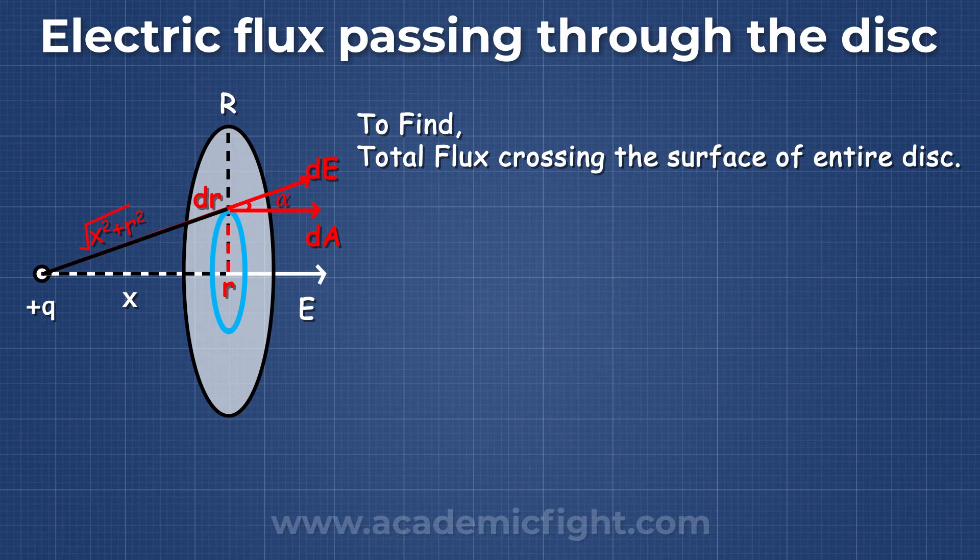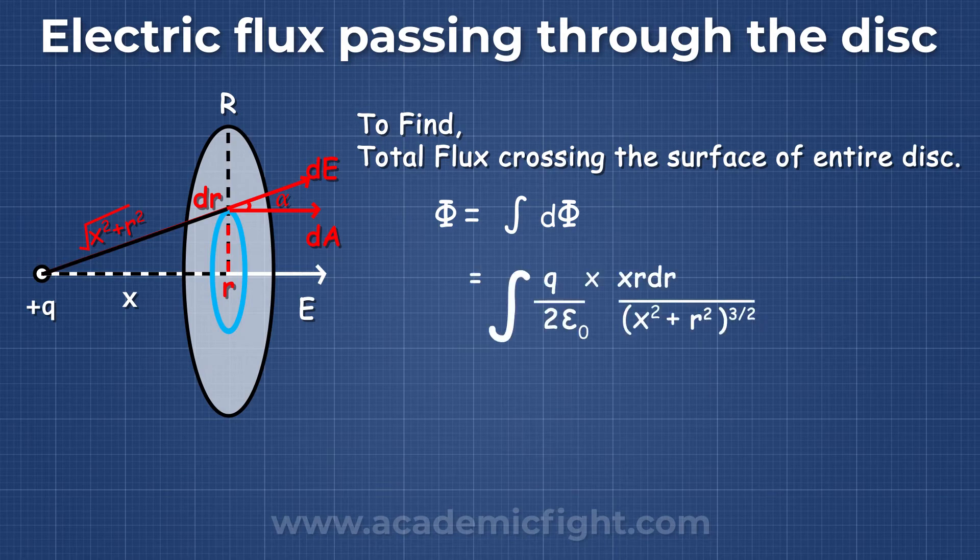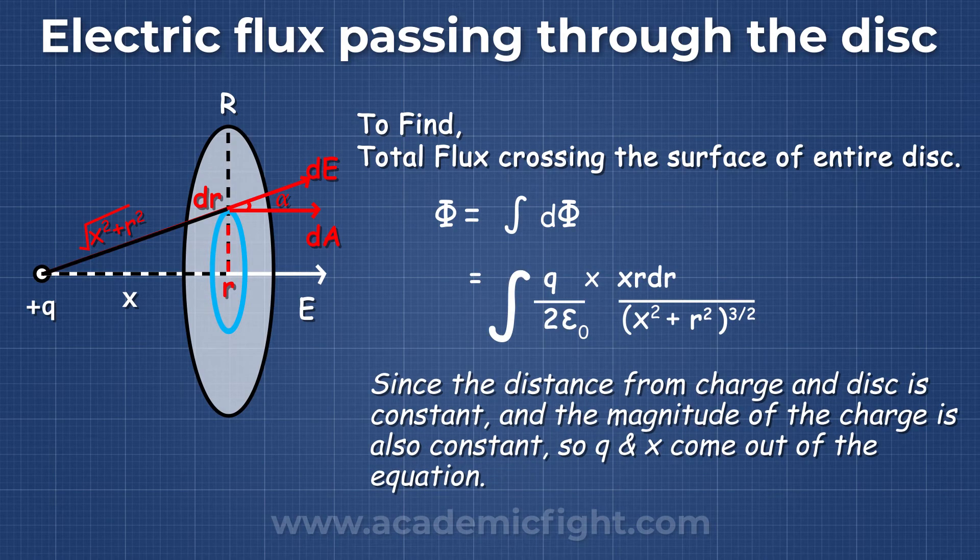As discussed earlier, to get the value of φ, we need to integrate dφ. Since the distance from the charge to the disk is constant, and the magnitude of the charge is also constant, so q and x come out of the equation.